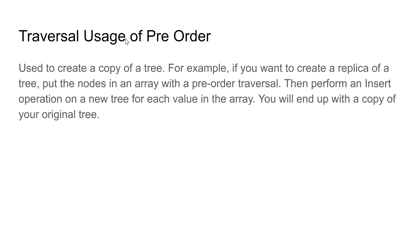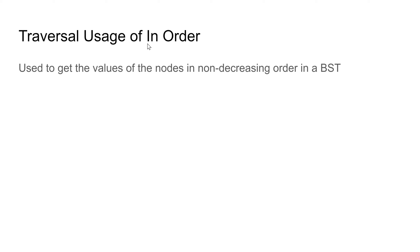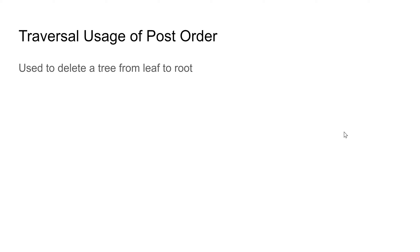Traversal usage of pre-order: used to create a copy of the tree. For example, if you want to create a replica of a tree, put the nodes in an array with the pre-order traversal, then perform the insert operation on a new tree for each value in the array, and you will end up with a copy of your original tree. Traversal usage of in-order: used to get the values of the nodes in non-decreasing order in a binary search tree.